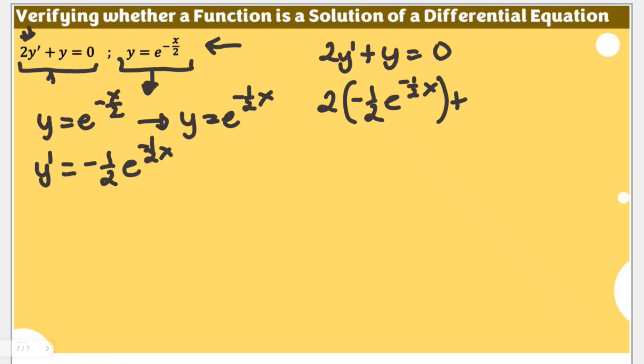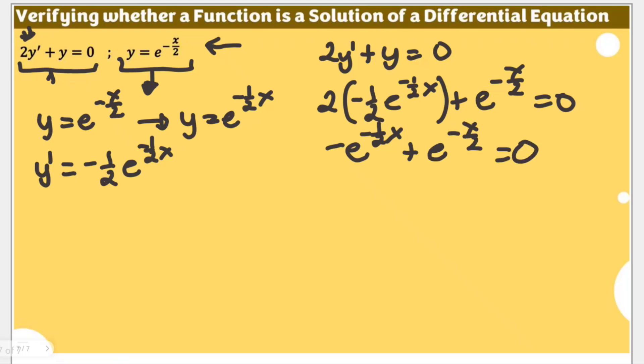So we have e to the power of negative x over 2 equal to 0. If we can satisfy this equation, then we can say the given function y is a solution. This gives us 2 times negative one-half, which is negative, times e to the power of negative one-half x, plus e to the power of negative x over 2, equal to 0.